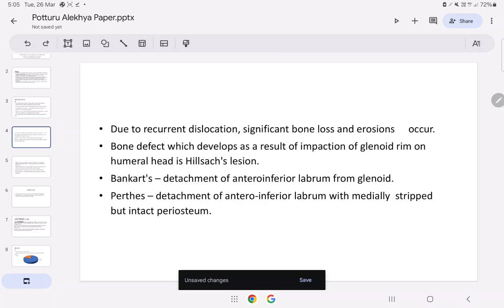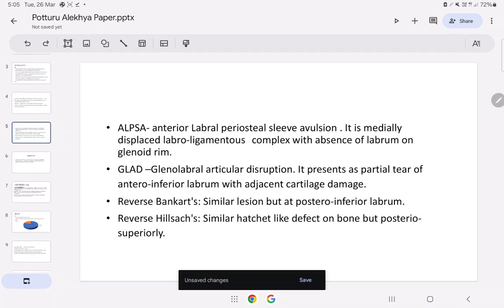Perthes is detachment of anteroinferior labrum with medially stripped but intact periosteum. ALPSA is anterior labral periosteal sleeve avulsion. It is medially displaced labral ligamentous complex with absence of labrum on glenoid rim.